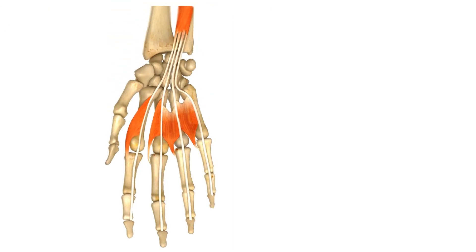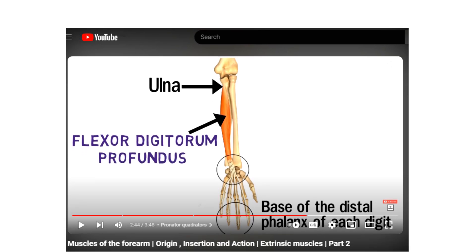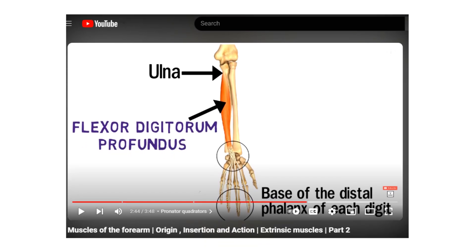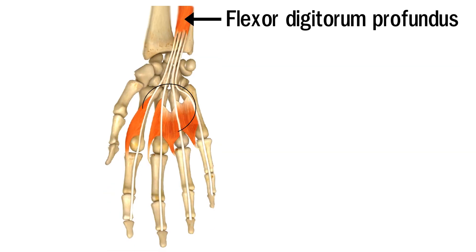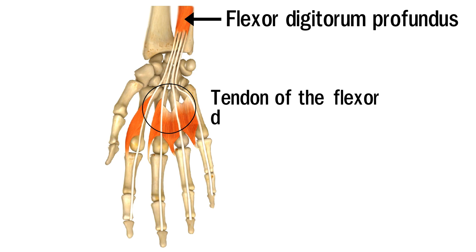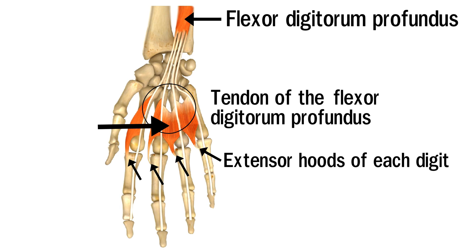Let's have a look. This is the flexor digitorum profundus muscle. We have already discussed the anatomy of this muscle in previous parts of the video — the link is in the description. This is the tendon of the flexor digitorum profundus, the point of origin of these muscles. And here they get attached at the extensor hood of each digit. So these are the lumbricals.